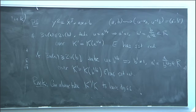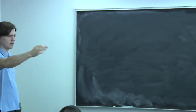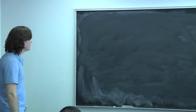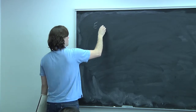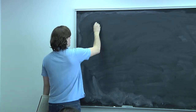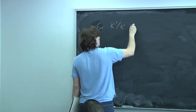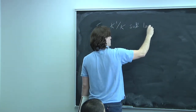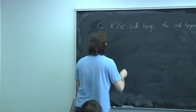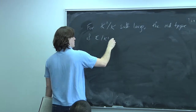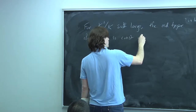Combining the last two things we proved: semi-stable reduction always stays the same as you go up, and additive reduction will turn into semi-stable reduction. That says that for any curve E, for a sufficiently large field K', the reduction type of E over K' is constant and is either good or multiplicative.